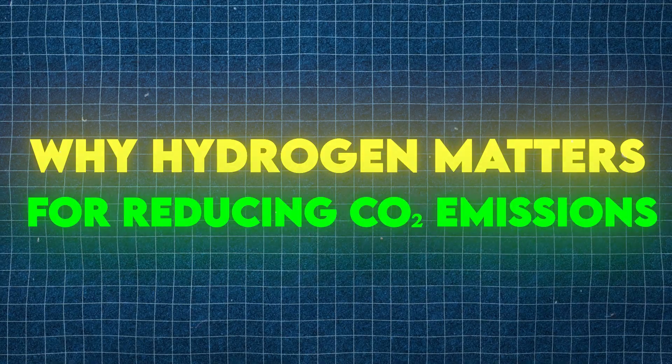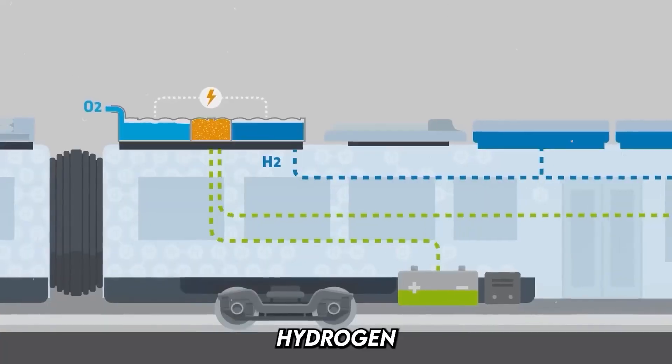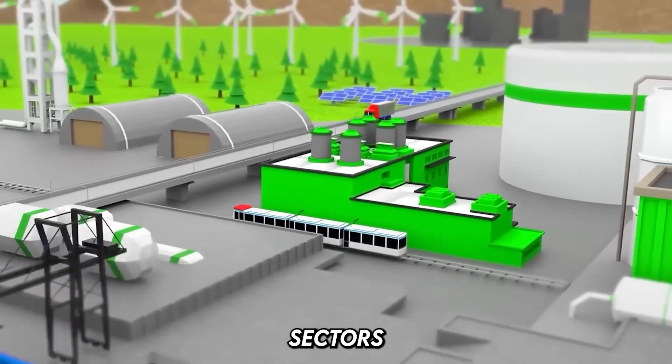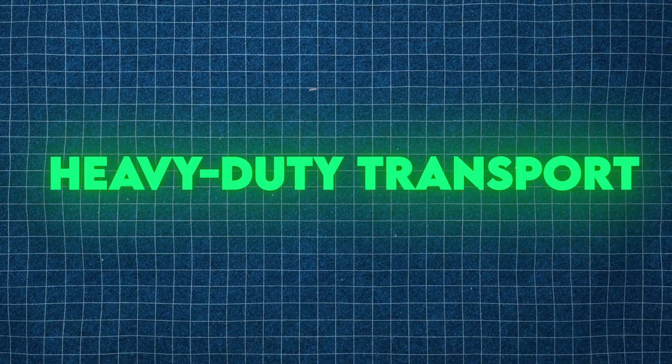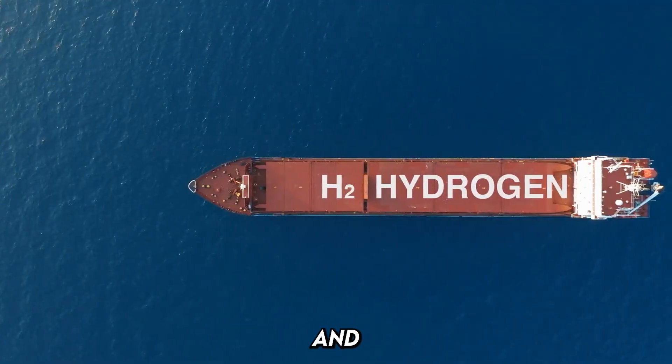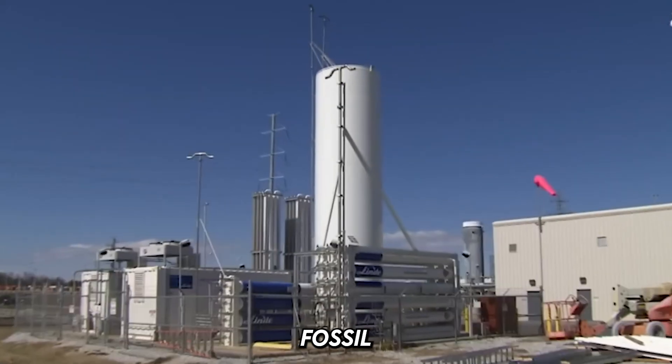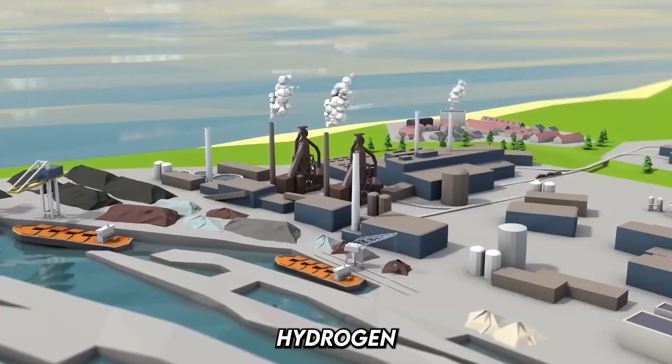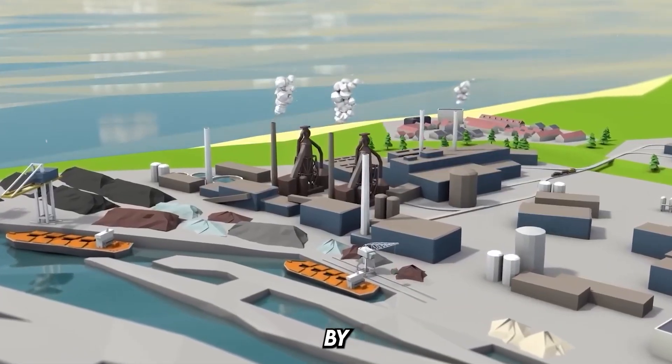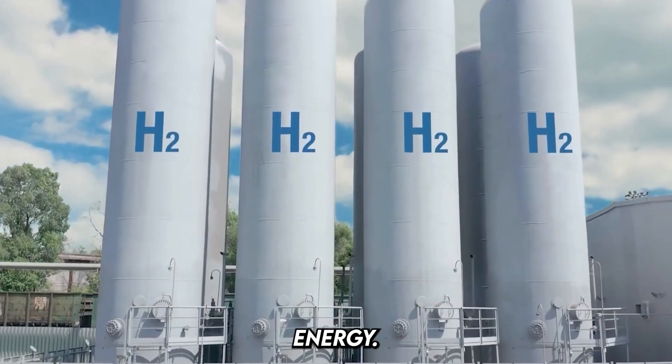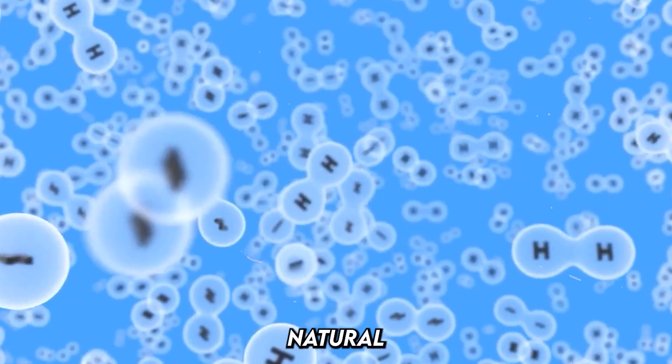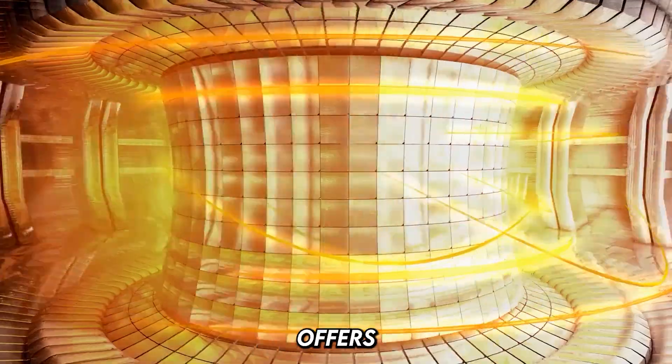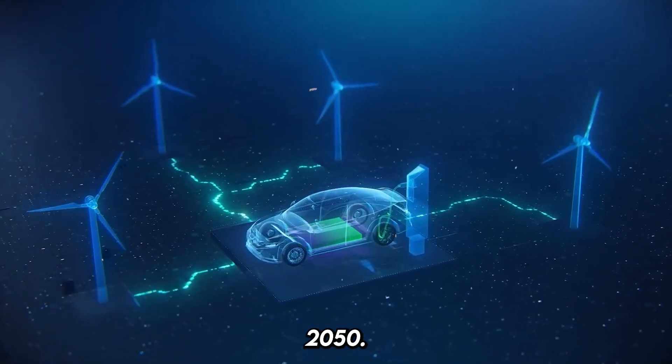Why hydrogen matters for reducing CO2 emissions: Hydrogen is crucial for cutting emissions in sectors where electrification is difficult. For instance, heavy-duty transport - trucks, ships, and airplanes can run on hydrogen instead of fossil fuels. Energy systems: Hydrogen can stabilize power grids by storing and dispatching renewable energy. Residential use: Hydrogen boilers can replace natural gas for heating homes. Green hydrogen, in particular, offers a pathway to achieving net-zero emissions by 2050.